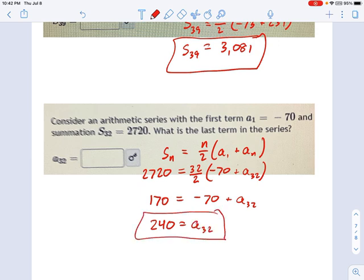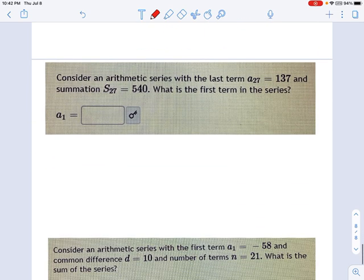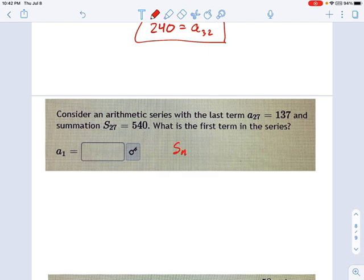So in this problem, you see it was the exact same formula that we just started with some different variables known. Here's another example. Let's start with our formula again. Sn equals n over 2, a1 plus an.